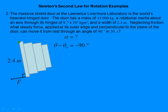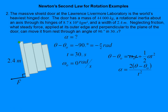The angular displacement is −90 degrees, which we must convert to −π/2 radians. It's negative because in the picture this makes it rotate clockwise. Time is 30 seconds, initial angular velocity ω₀ is 0 radians per second. Using the third kinematic equation and solving for alpha, we get −3.49 × 10⁻³ radians per second squared — that's a very small acceleration.